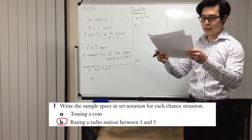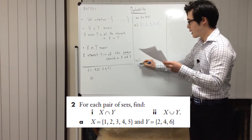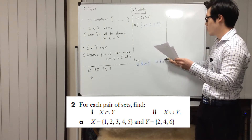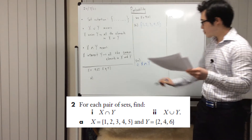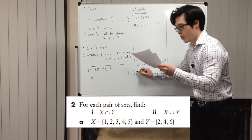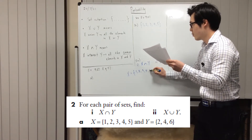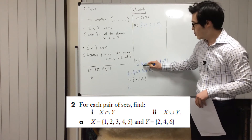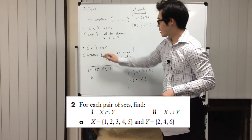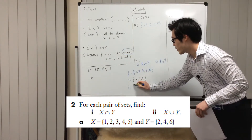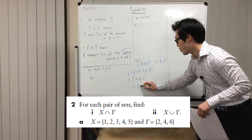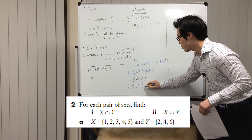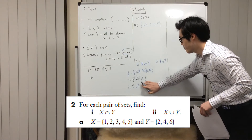Question 2a says: for each pair of sets, find part (i) X intersect Y and part (ii) X union Y. For X, the elements are 1, 2, 3, 4, 5, and for Y we have other numbers. X intersect Y means write all the numbers that are common to both X and Y. The numbers common to both X and Y are 2 and 4 — those are the only common elements — so write those inside the bracket.